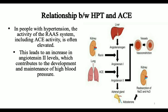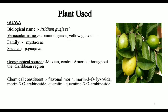In people with hypertension, the activity of the RAAS system including ACE activity is often elevated, leading to an increase in angiotensin-2 levels which contribute to the development and maintenance of high blood pressure. We are using the Guajava plant, whose biological name is Psidium Guajava and common names are Common Guajava and Yellow Guajava. The family is Myrtaceae and species is Psidium Guajava. The geographical source is Mexico and Central America throughout the Caribbean region. The chemical constituents of Psidium Guajava include Flavonol Morin, Morin-3-O-Lyxoside, Morin-3-O-Arabinoside, etc.